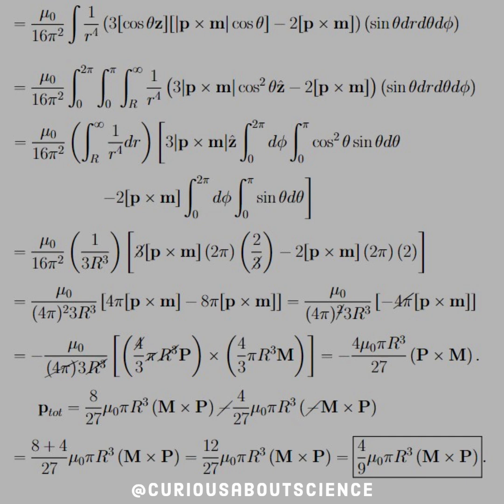Similarly, the phi integral gives us 2 pi again, and the sine integral gives us 2 for the second product, and now we can just simplify it all down. You see we get 4 pi from the first product, 8 pi from the second product, that condenses to negative 4 pi, which cancels out with a factor from the 16 pi squared. And now what we have to do is plug in what little p and little m mean as far as keeping their areas together, and you see that we have a 4 thirds pi R cubed from the P, the R cubed cancel from the P as well. Here we're left with, after we take out all those constants, negative 4 mu naught pi R cubed over 27, with big P cross M.